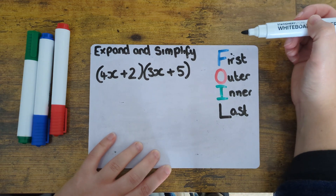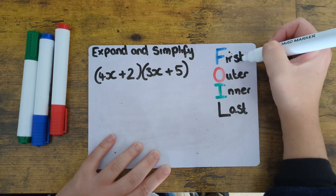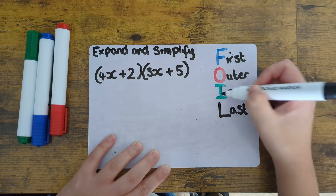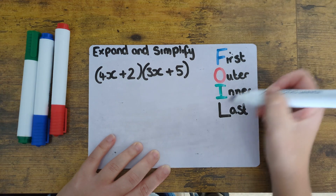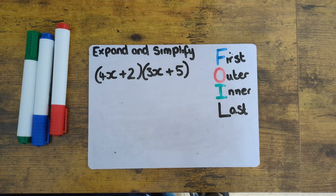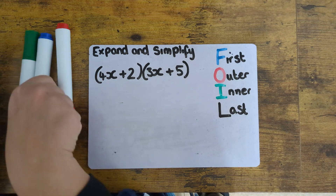The F stands for first, the O stands for outer, I stands for inner and L stands for last, and this corresponds to which part of the brackets we need to look at.